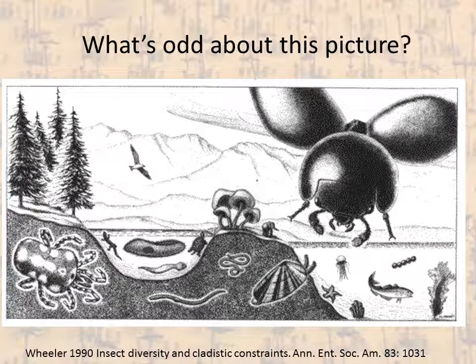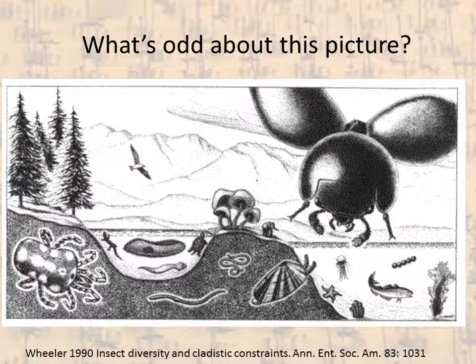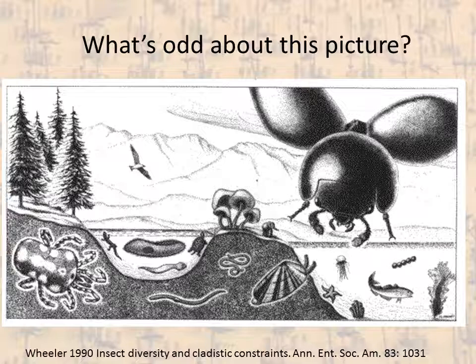Here you can see a picture of a landscape on planet Earth with lots of living organisms, and you can see there's something funny about it — the organisms are all the wrong size relative to each other. We've got a very large beetle representing the insects, a very large mite representing other arthropods, but a tiny elephant and an enormous fungus. Of course, the size represents the number of described species in these different taxonomic groups.